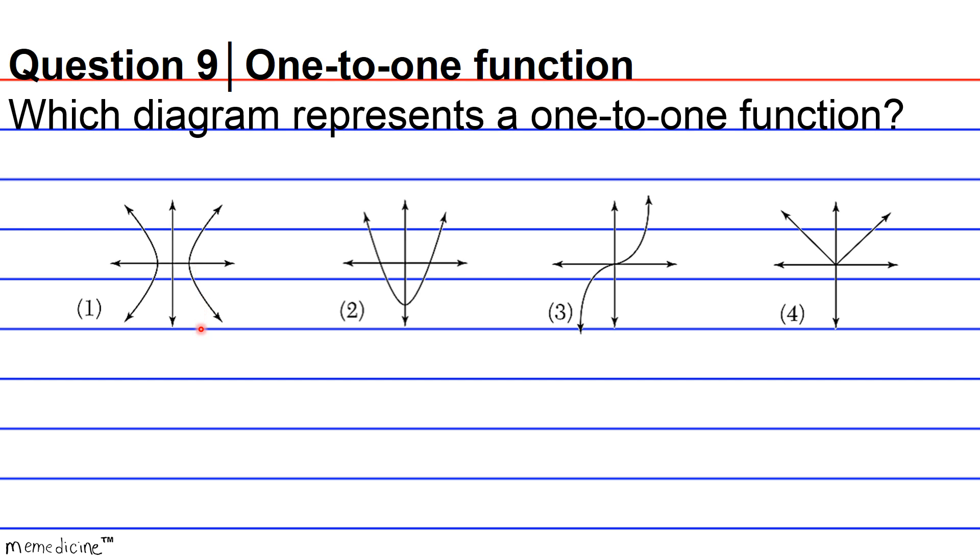Graphically, that means that a vertical line is going to intersect the graph of the function at most once, no more than one time. So this criteria basically eliminates answer choice one. It's not even an actual function, let alone a one-to-one function, okay?